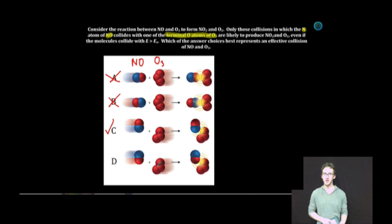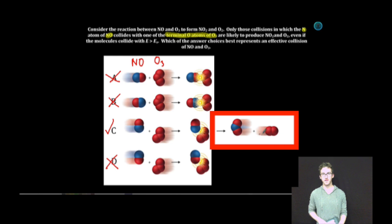But let's double check the last answer. Here, the oxygen end of NO collides with terminal oxygen in ozone. Unlikely to result in an effective collision. Based on the description given, we're looking for nitrogen colliding with a terminal atom of oxygen in the ozone molecule to create our effective collision.